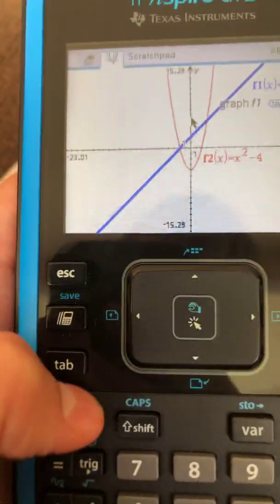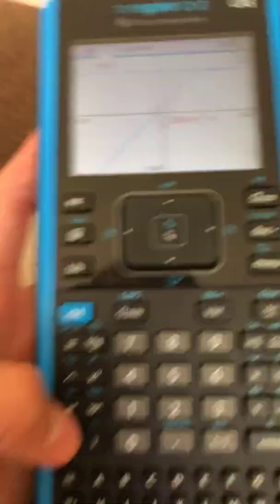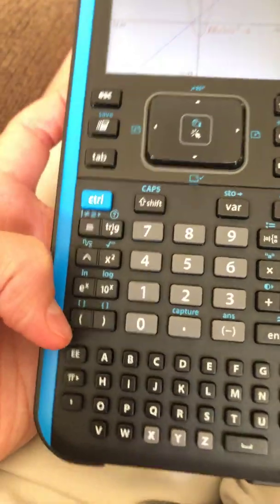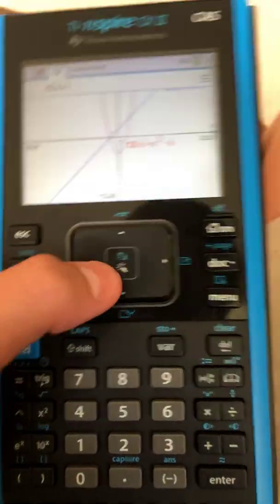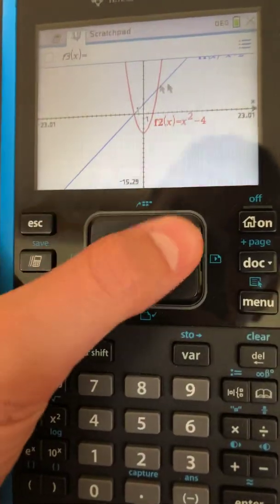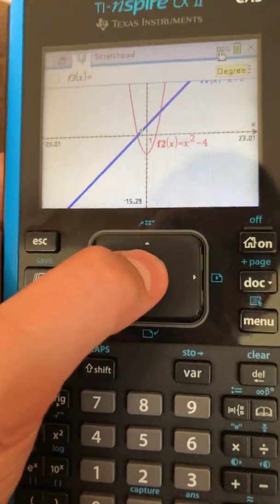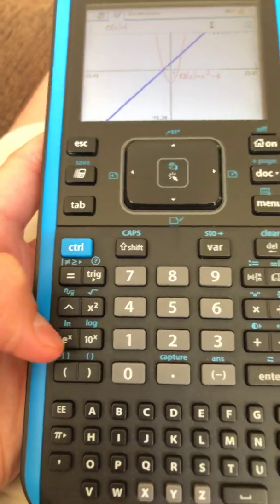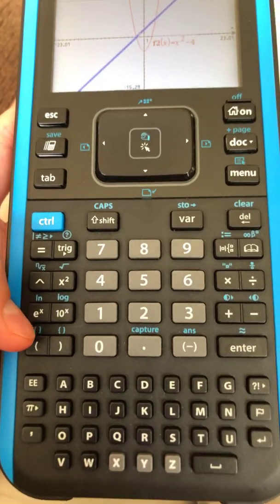You know, let me do one more example. Let's go tab. This thing, I love how it can do, I should turn it to radians because I love how it can do trigonometry, graphing of trigonometric functions of course.